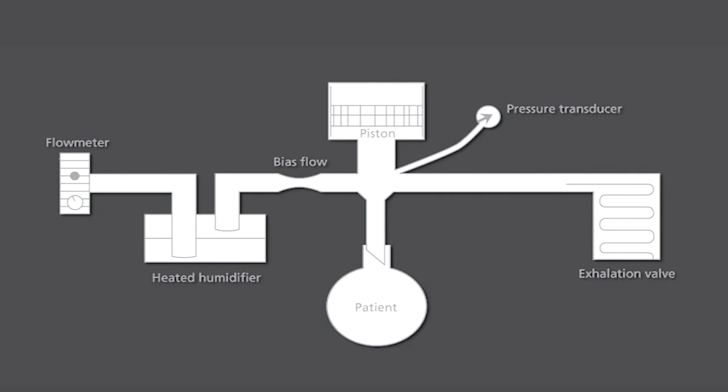This diagram represents a simple schematic of the ventilator circuit. The bias flow enters the system and passes through the humidifier, where it is heated and humidified prior to delivery to the patient.